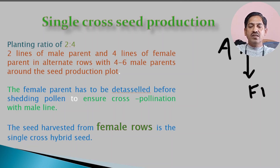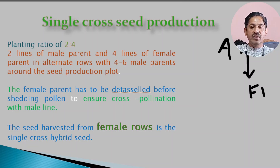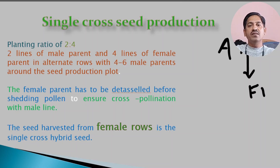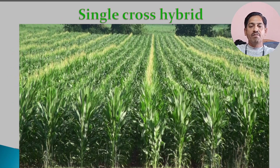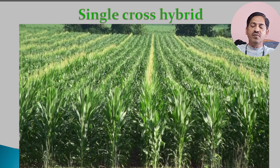If you have a male sterile line, you do not need to do detasseling. But if you do not have a male sterile line, then you need to do detasseling. Detasseling means the removal of tassels from the female parent before they shed pollen. In single cross hybrid production, two rows are male parent and four rows are female parent.